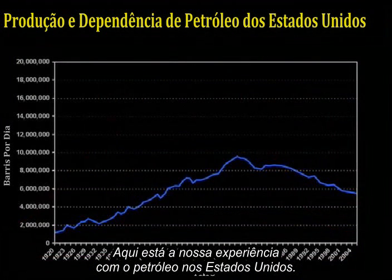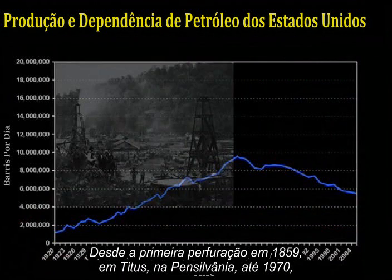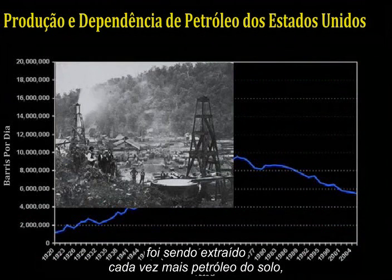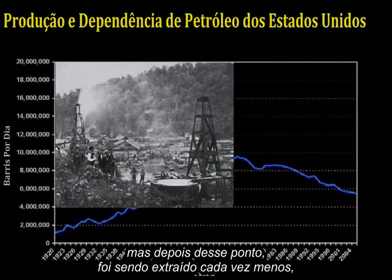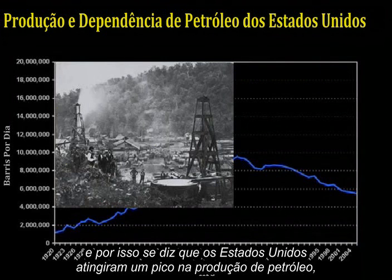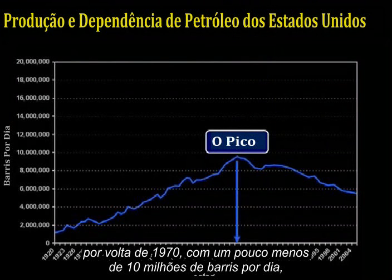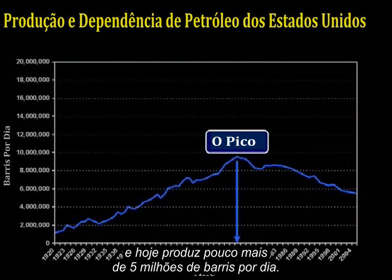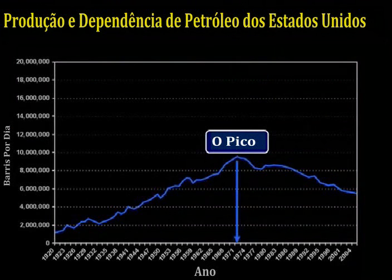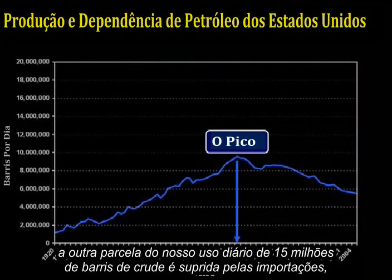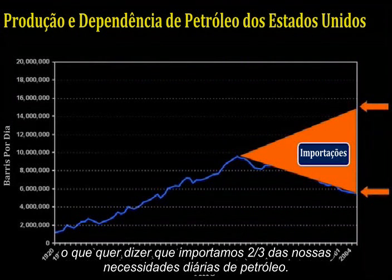Here's our experience with oil in the United States. From the first well drilled in 1859 in Titusville, Pennsylvania, until 1970, more and more oil was progressively pumped out of the ground. But after that point, less and less came out of the ground. The U.S. hit a peak of oil production at around 1970 at just under 10 million barrels a day, and today produces just a little over 5 million barrels a day. Counting only our crude oil consumption, the remaining balance of our 15 million barrel a day crude oil habit is met by imports — we import two-thirds of our daily petroleum needs.